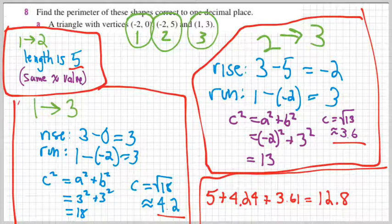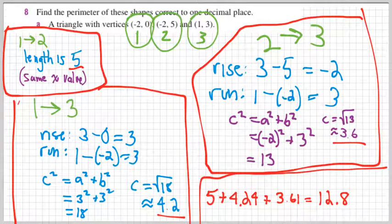Hey there, it's Mr. Thompson. I'm going to run through a quick example of a problem, and we're going to find the perimeter of a triangle given the coordinates of the vertices of the triangle, the corners. So here's the problem. It's just from our textbook.